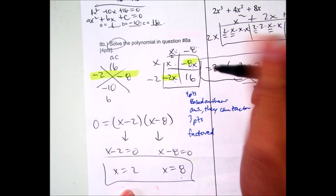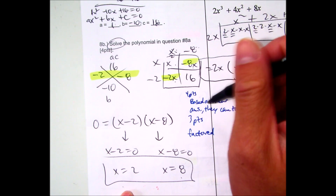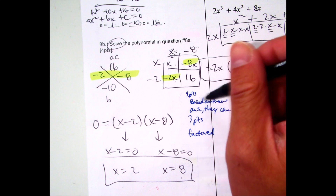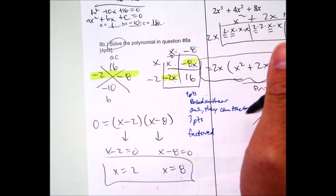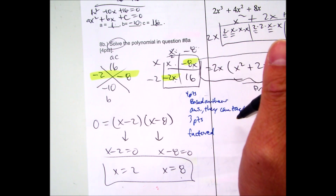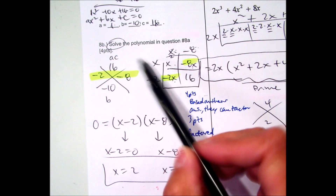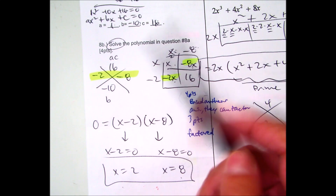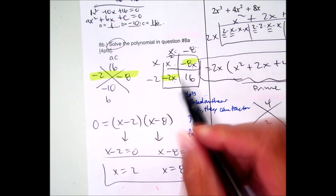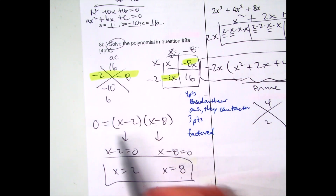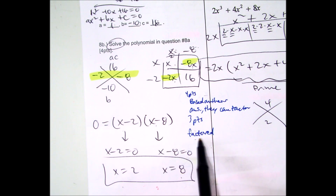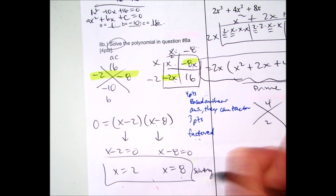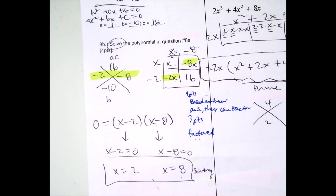This problem was out of four points. If you used another method that wasn't factoring — say quadratic formula — it might be correct, but I told you to solve by factoring. If you just stopped at (x − 2)(x − 8) and boxed your answers, that gives you three points because you just factored. Setting equal to 0 and solving is the solving step. This question was out of four points.